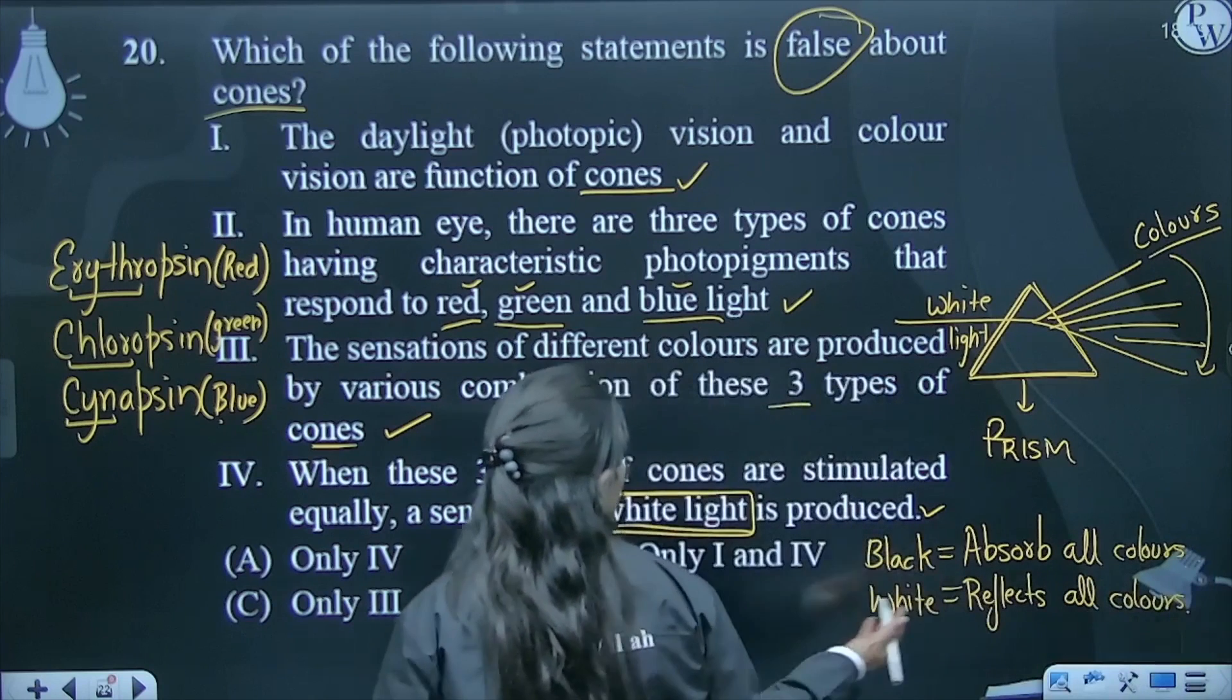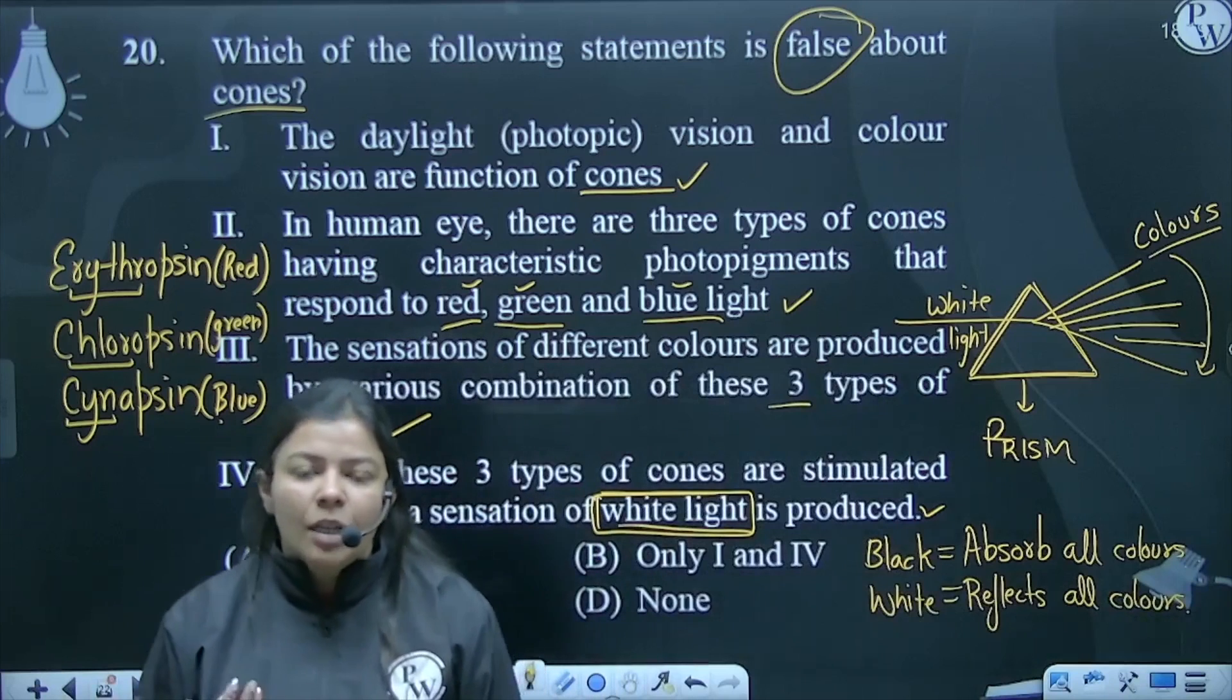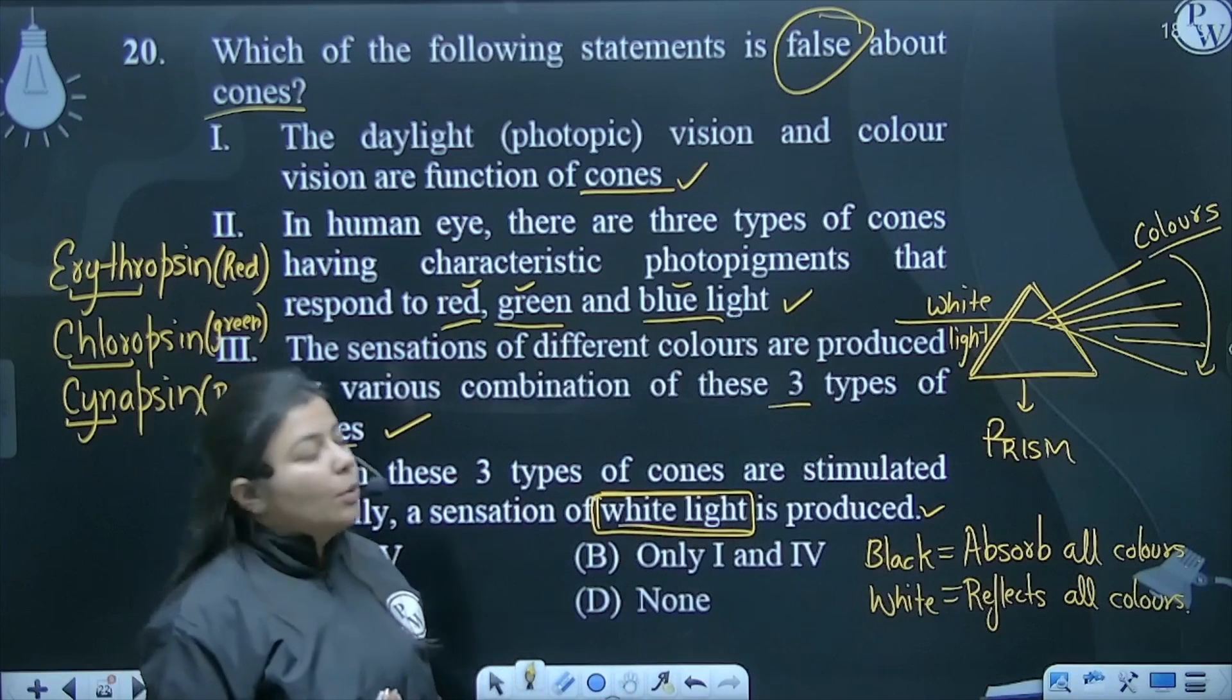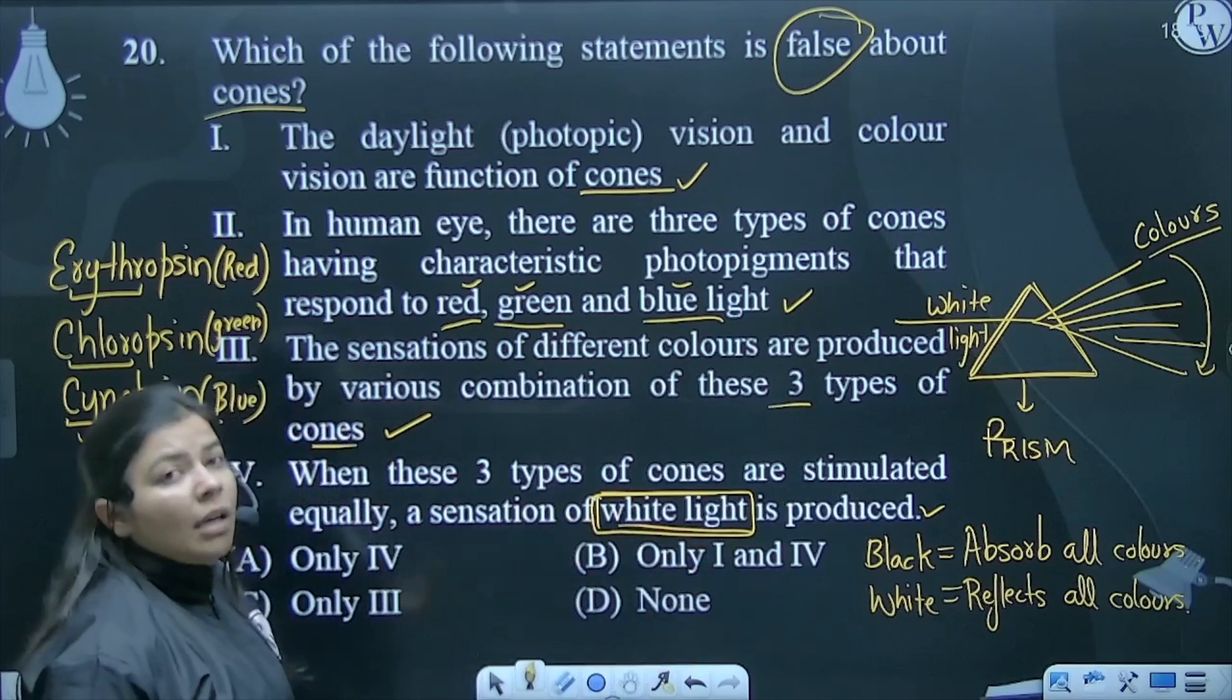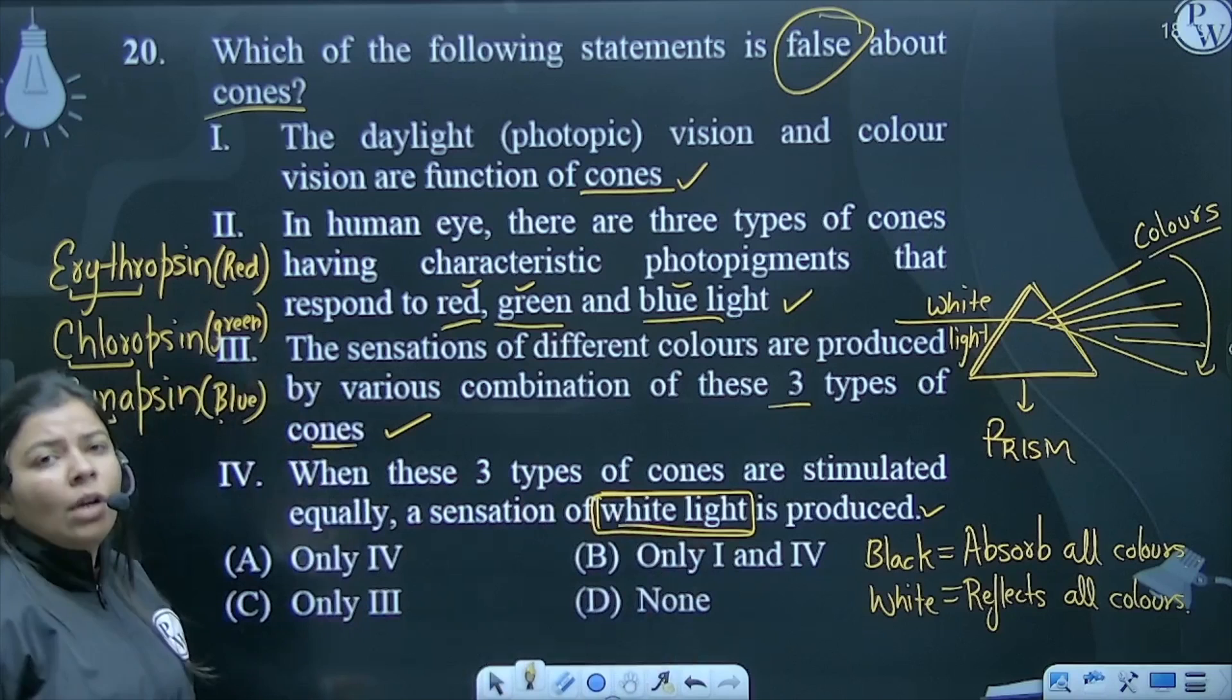This is general knowledge. White color reflects all colors. Black color absorbs every wavelength, basically light. It absorbs and heats up.